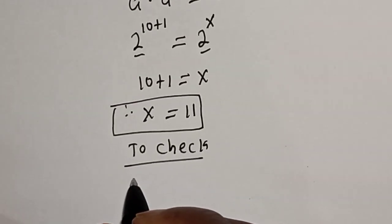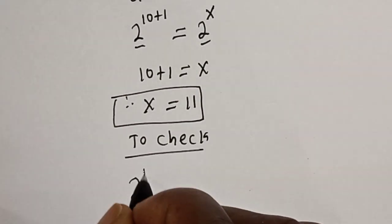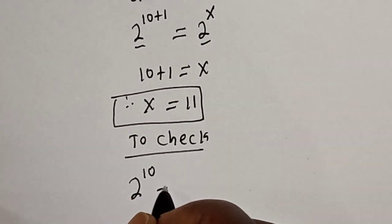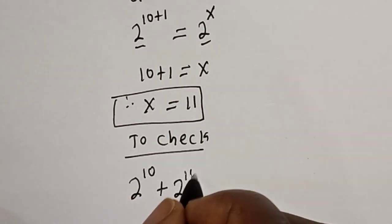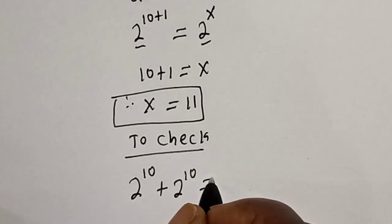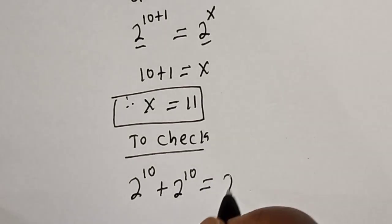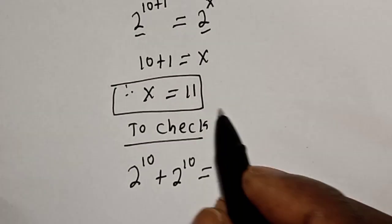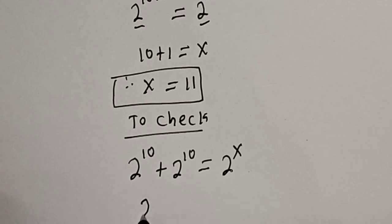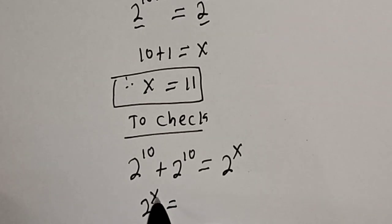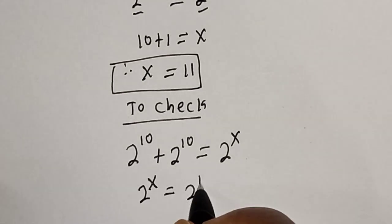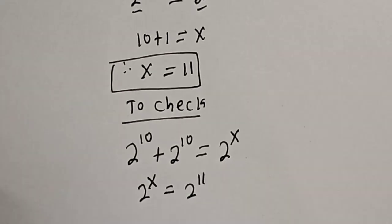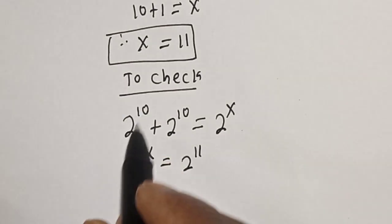To check: we have 2 raised to power 10 plus 2 raised to power 10 must be equal to 2 raised to power x, where x is 11. So 2 raised to power x is equal to 2 raised to power 11.